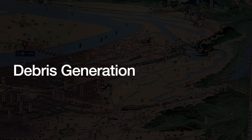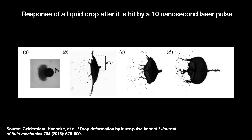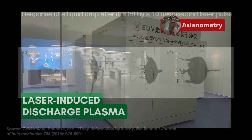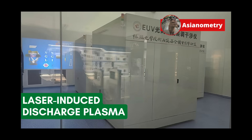One last thing: a good EUV light source must also produce as little debris as possible. Hitting the tin with the CO2 laser generates debris in the form of small pieces of tin or fast-moving tin ions. The debris can damage the multilayer optics and limit their lifetime, so debris generation is a game-breaking issue. In a prior video, I discussed a major LPP light source alternative called Laser Induced Discharge Plasma, or LDP.